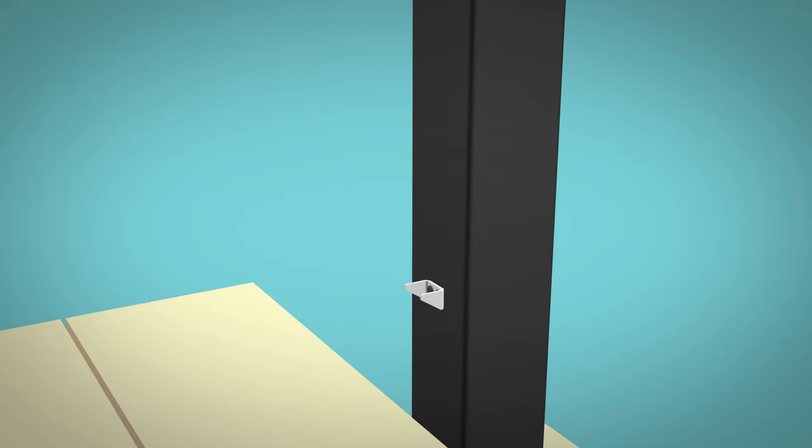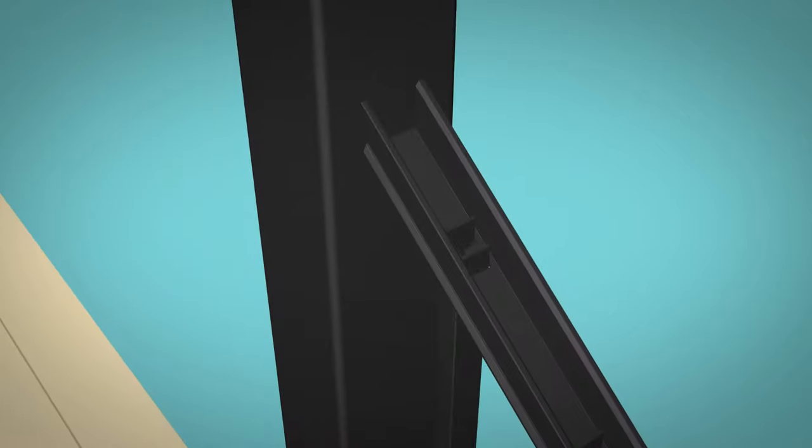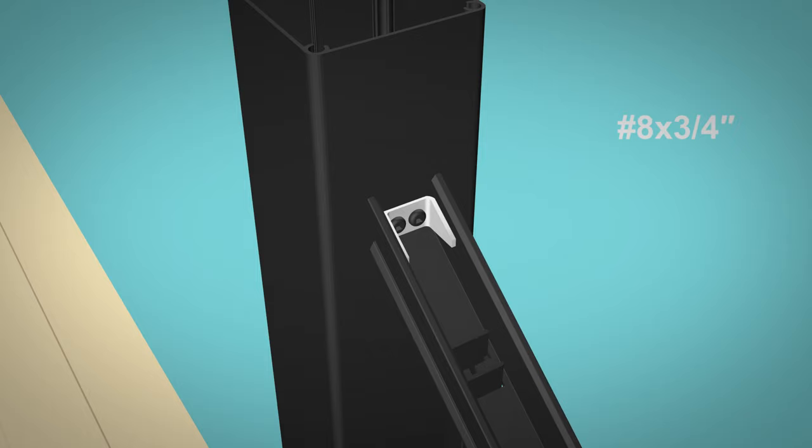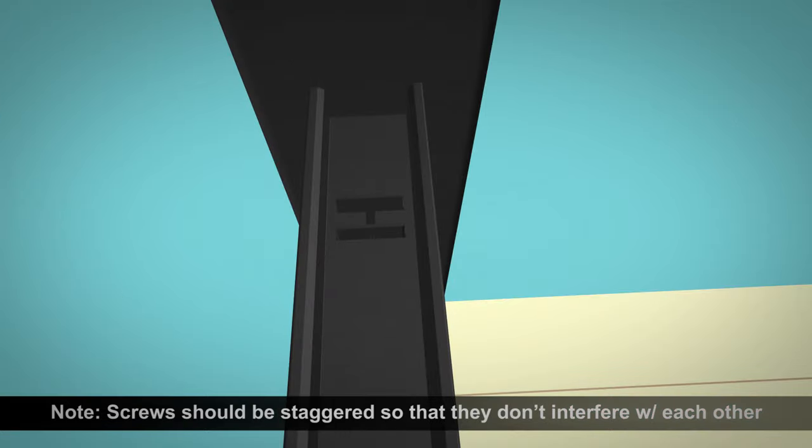After the lower extrusion is fully seated on the lower clips, insert the stair panel attach clips into upper extrusion. Secure the attach clips to the post with two number eight by three quarter inch self drilling screws. Then secure the upper extrusion to the stair panel attach clip. Repeat this same procedure for the upper extrusion of the lower post.